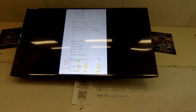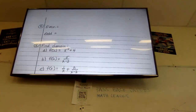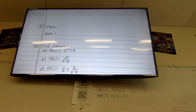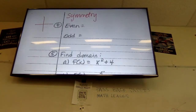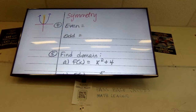Number four is about even and odd, which deals with symmetry. We can look at symmetry on the graph to determine whether it's even or odd. It's even symmetry if it's reflective over my y-axis. So if I have this parabola and I fold it down the y-axis, it should be the same on both sides — that's a visual representation of an even graph.